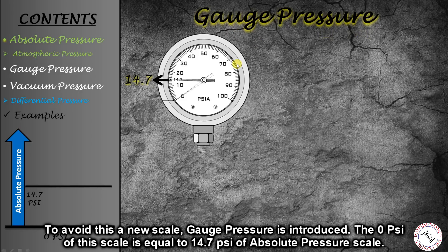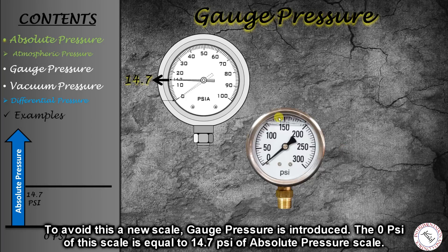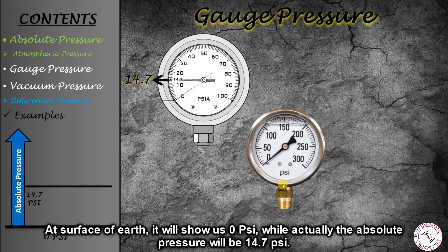The zero of gauge pressure corresponds to atmospheric pressure. Looking at this pressure gauge instrument, which measures gauge pressure, a reading of 0 psi gauge is equal to 14.7 psi absolute. When we use this gauge on the surface of the Earth, it will always show 0 psi gauge, even though 14.7 psi of absolute pressure exists.